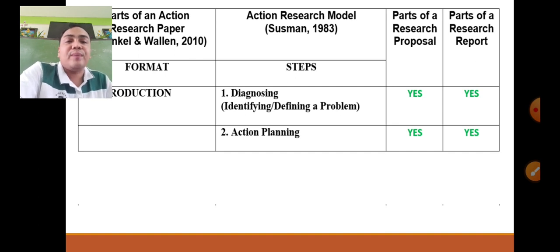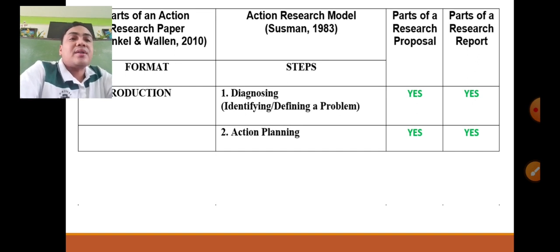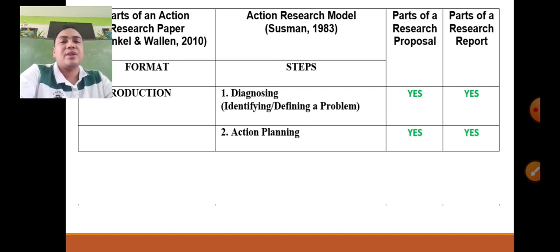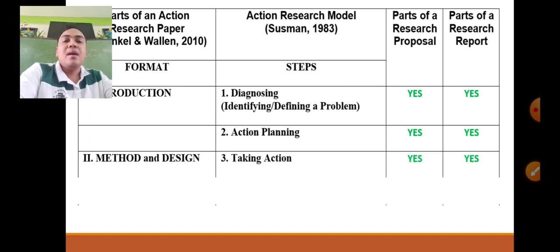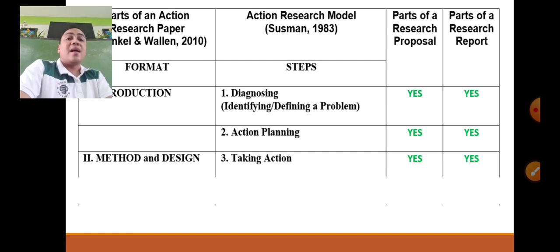The first part of an action research manuscript is the introduction, which includes the two first steps of the conceptual framework: diagnosing and action planning. These are essential parts of both the research proposal and the research report. Under the introduction, we discuss the existing problems plus the possible solution for your action research — corresponding to diagnosing and action planning. The next part is the methodology, known as method and design.